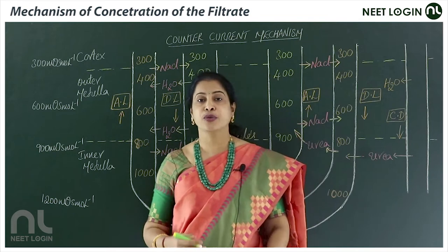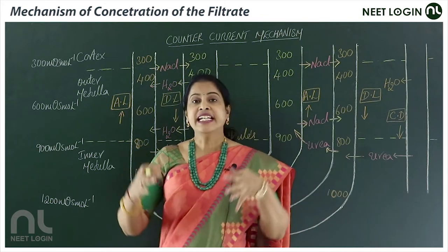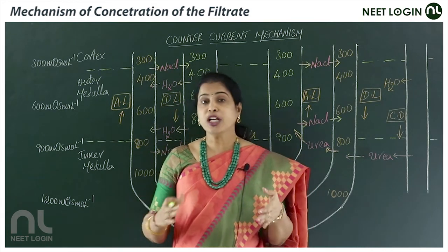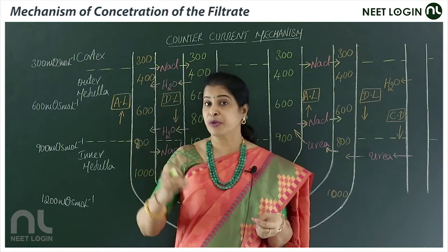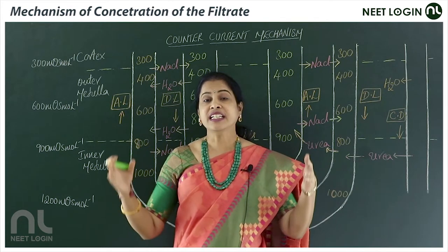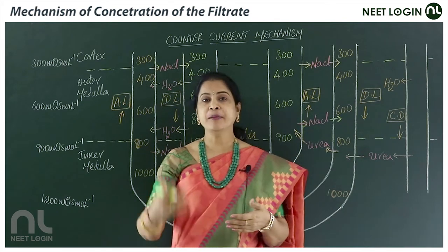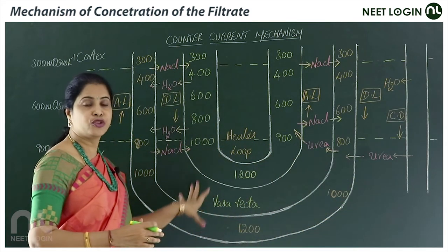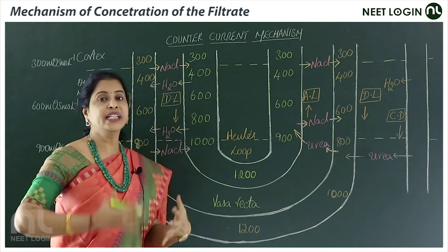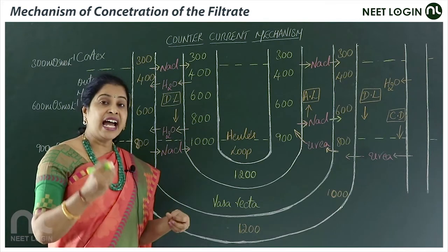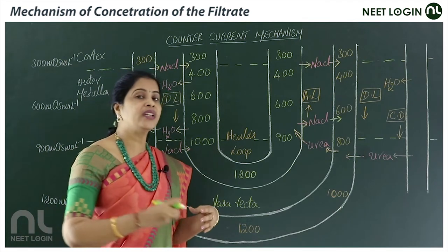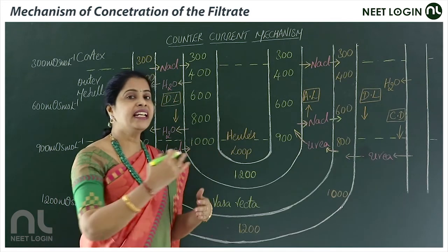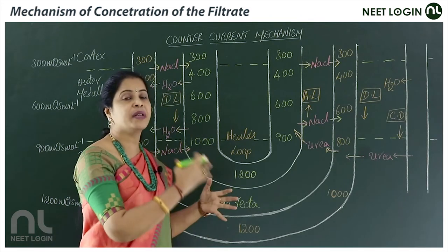To excrete hypertonic urine, it's not easy — it needs a specific mechanism. The one which plays a role here is the counter current mechanism. In order to eliminate concentrated urine, the loop of Henle and vasa recta play a major role. The ions involved are NaCl and urea, and the arrangement and flow of these limbs ultimately leads to eliminating highly concentrated urine.